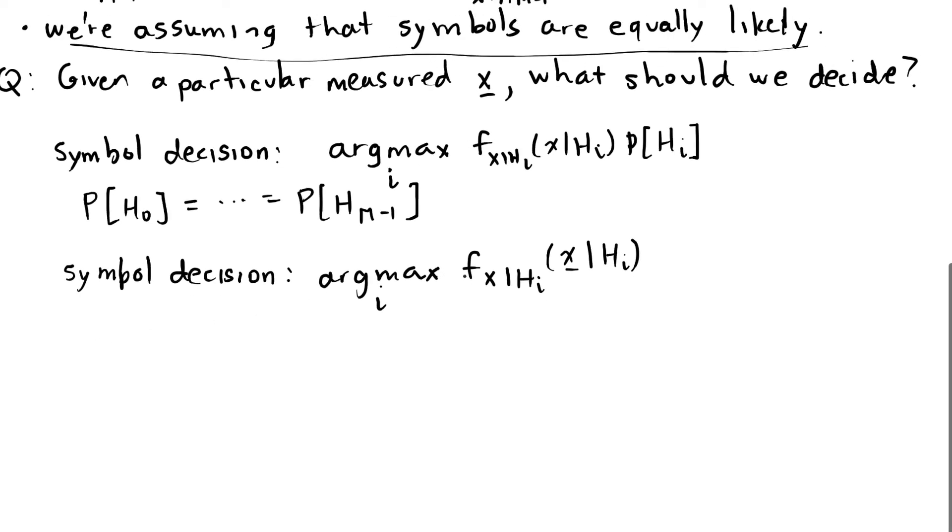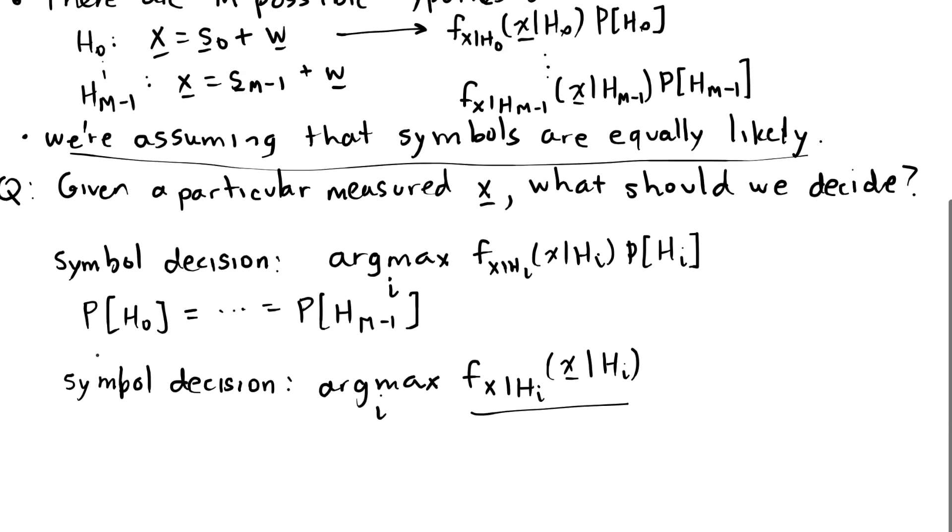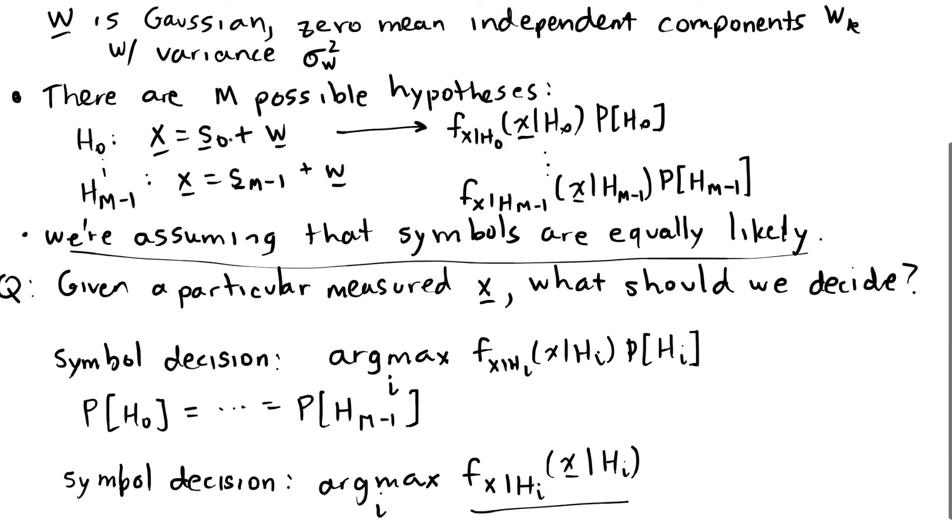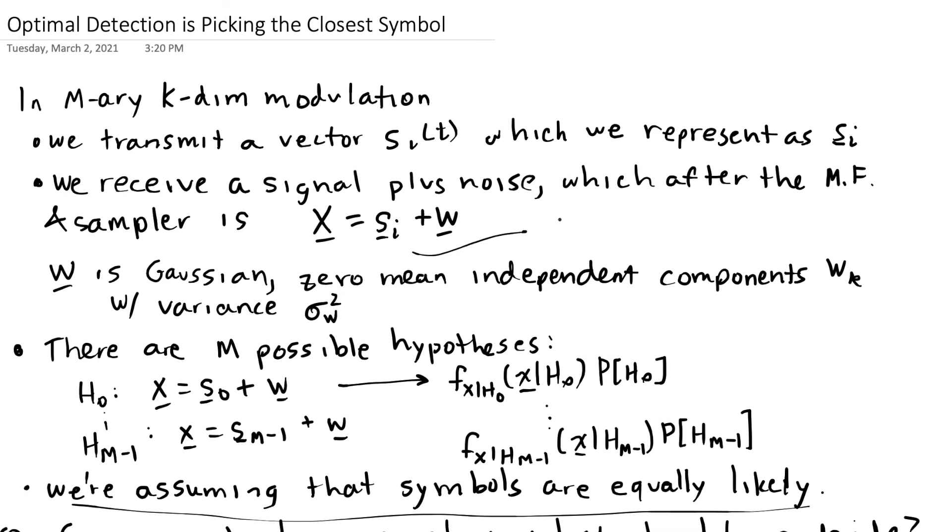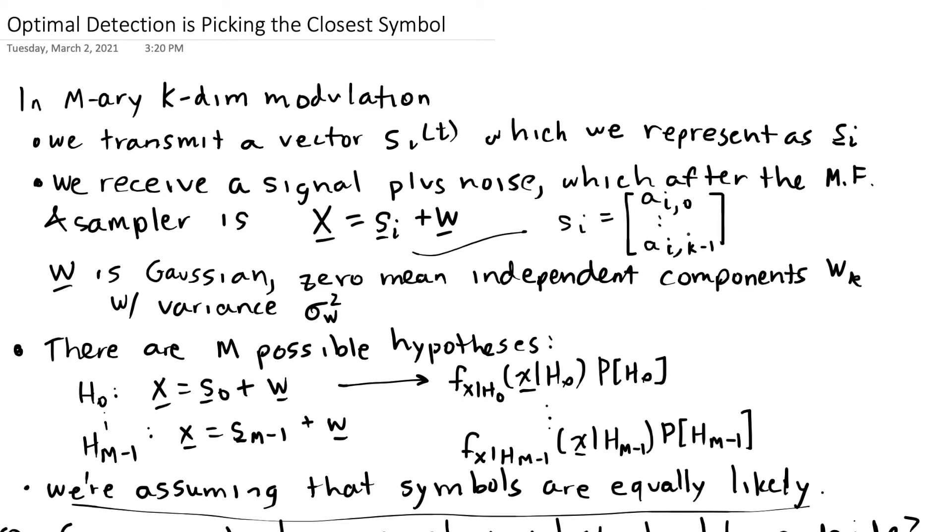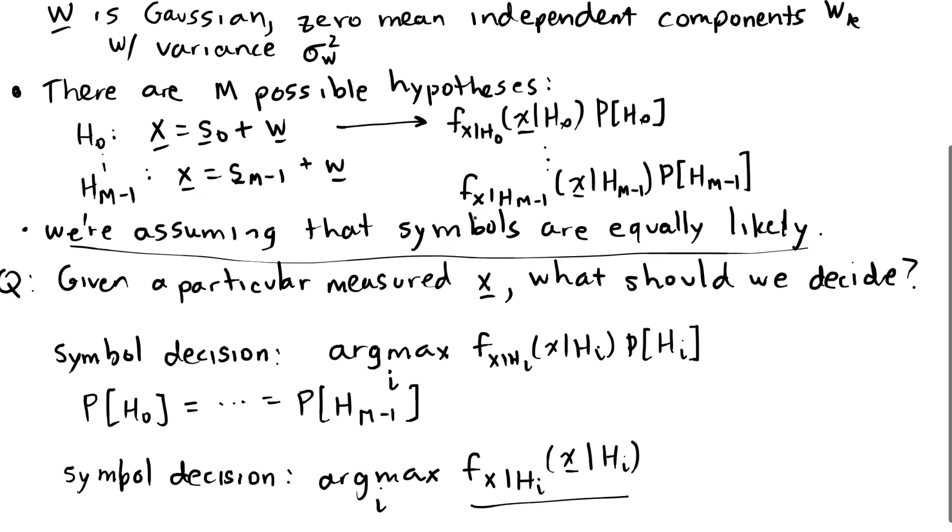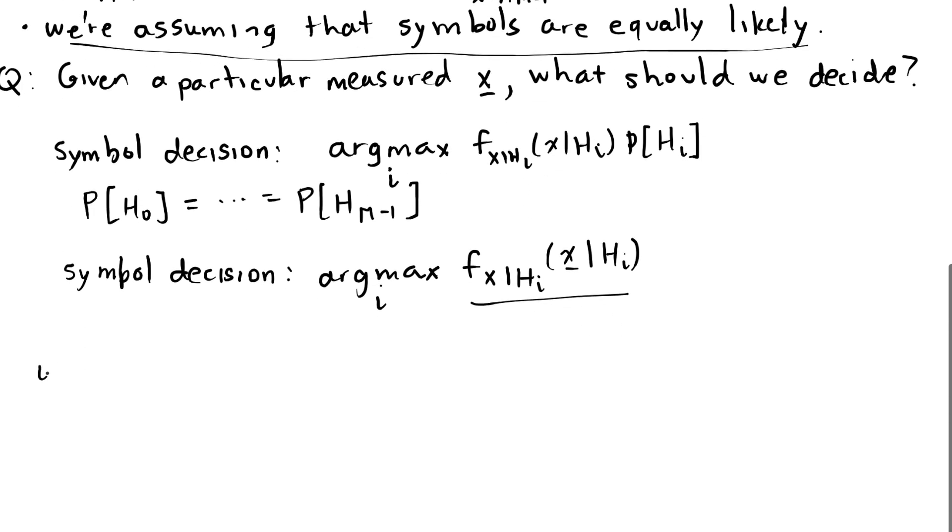The next thing we're going to do is we're going to plug in what this probability density function is. We said that our measurements x are Gaussian. They are different for each hypothesis, but they're centered at the symbol that was sent. Recall that this symbol that is sent, Si, it's this k-length vector, Ai,0, all the way down to Ai,K-1. That describes our symbol and signal space, and we can then say that's our mean of the vector x, but it's also a Gaussian with some noise w